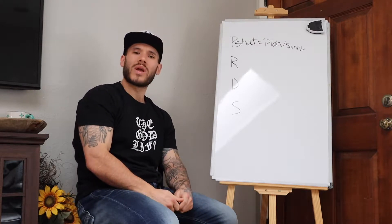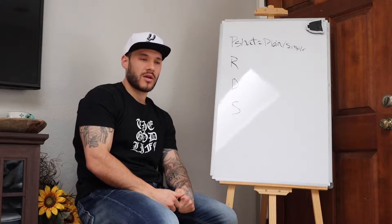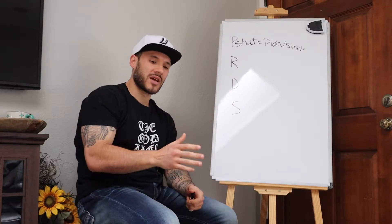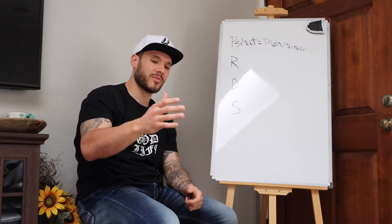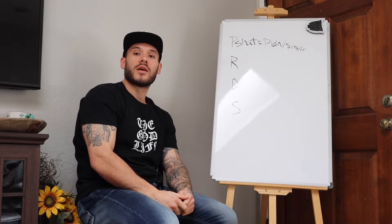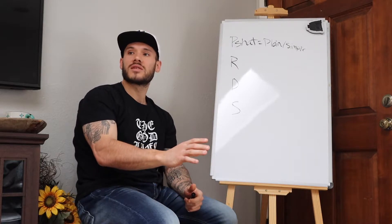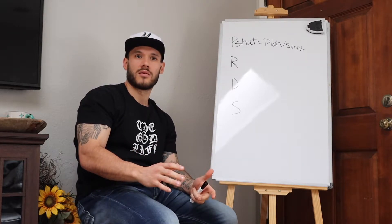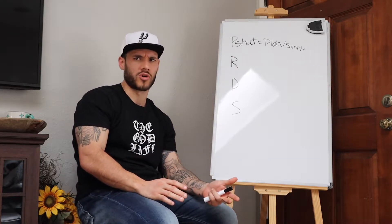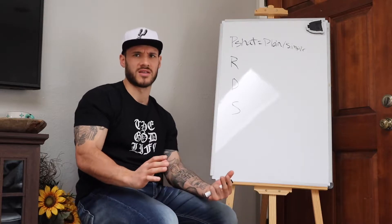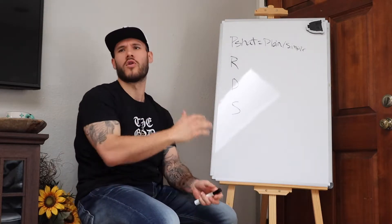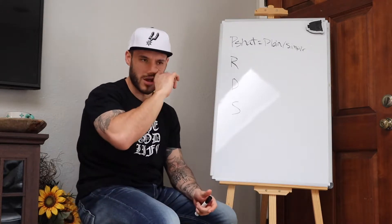We have many things in the Torah — the first five books: Genesis, Exodus, Leviticus, Numbers, and Deuteronomy — that give us commandments but don't explain how to do them. This is not just one or two things; it's over and over and over again, all through the Bible, all the way through the book of Revelation.